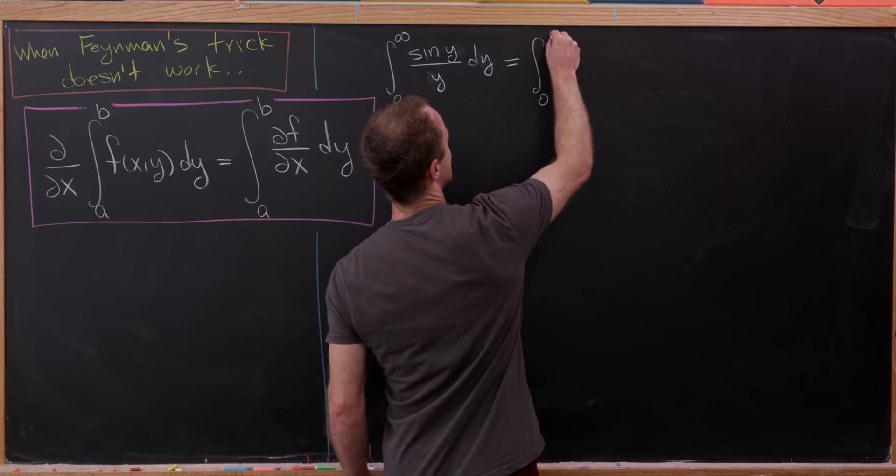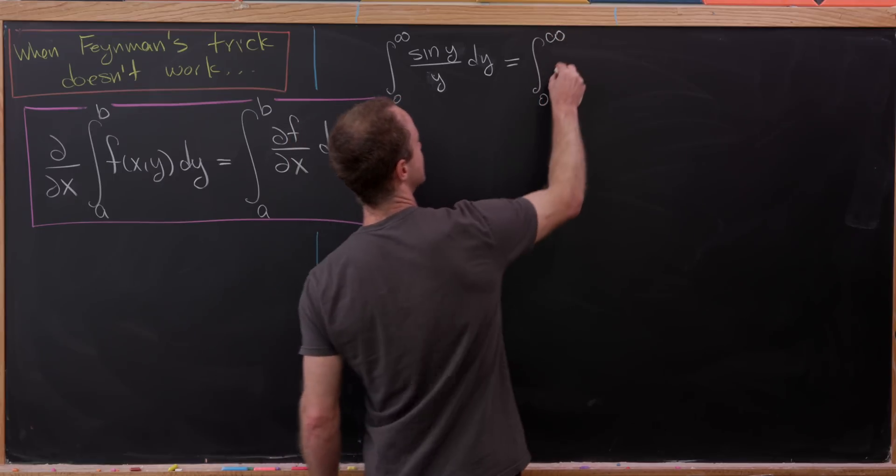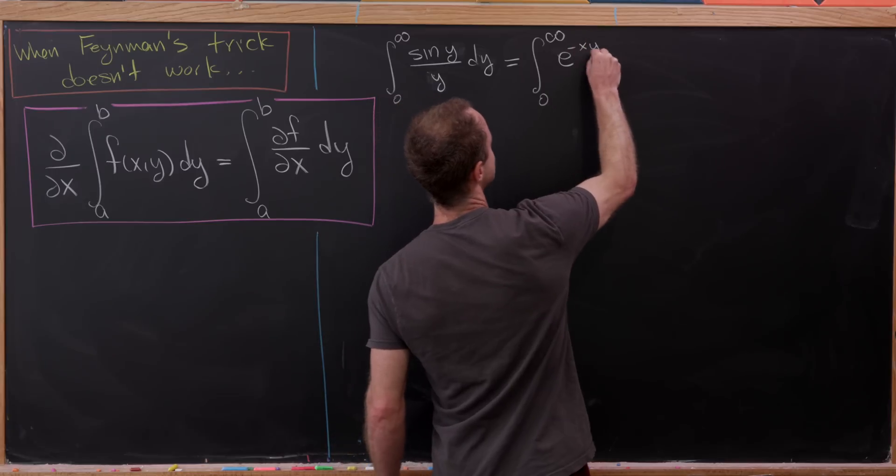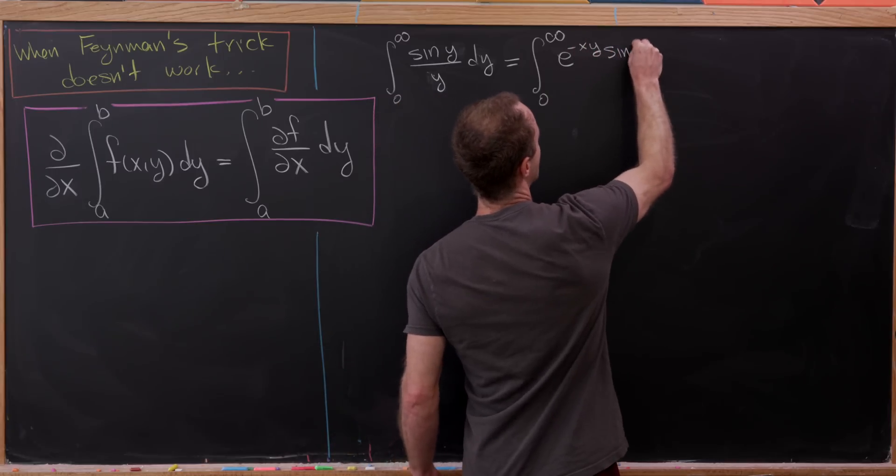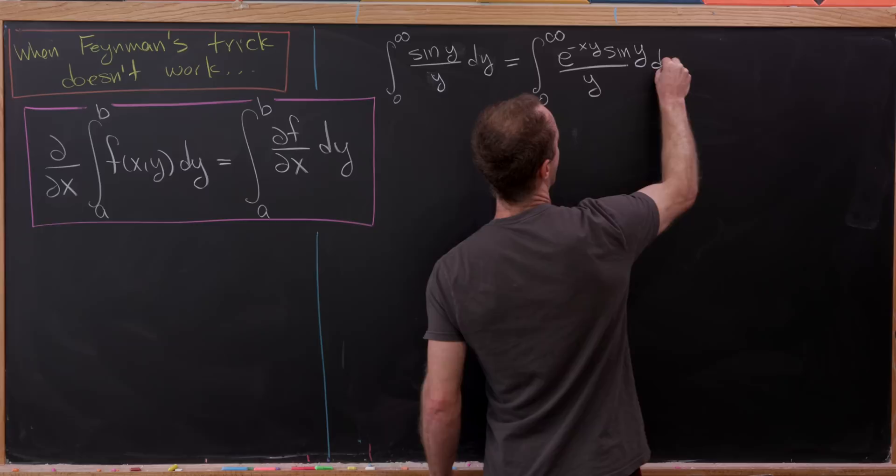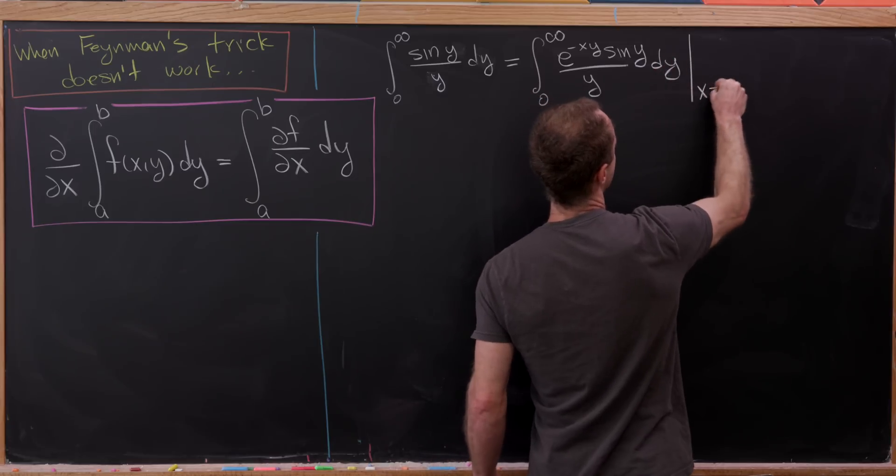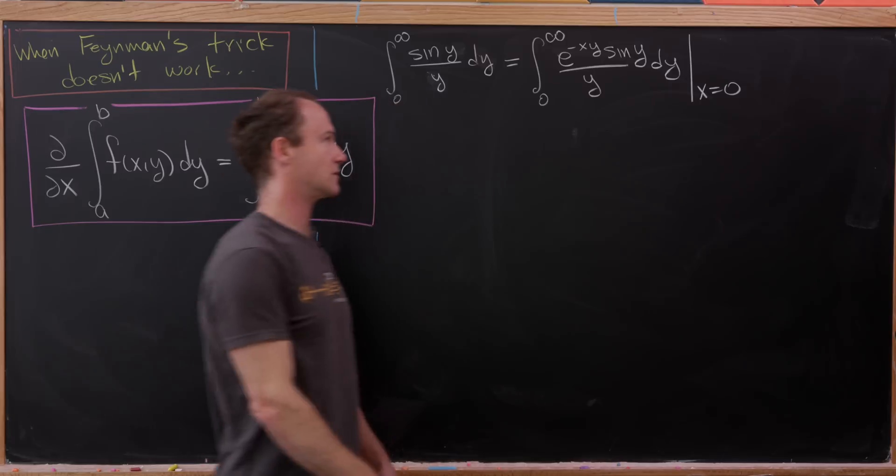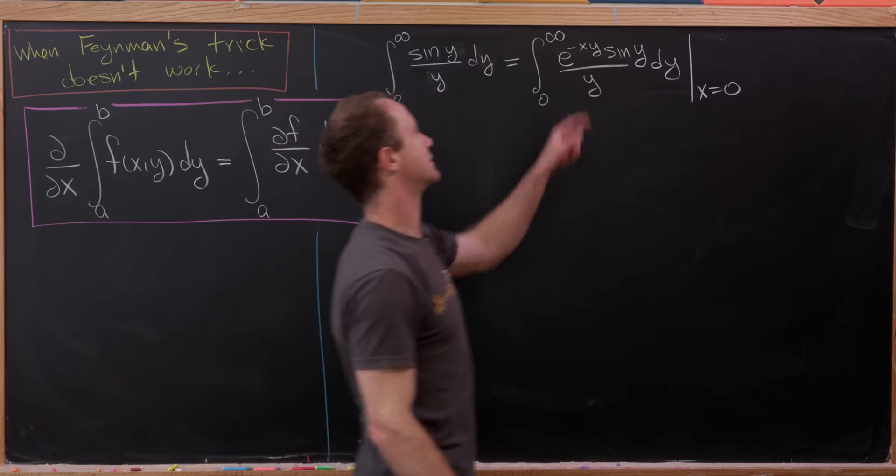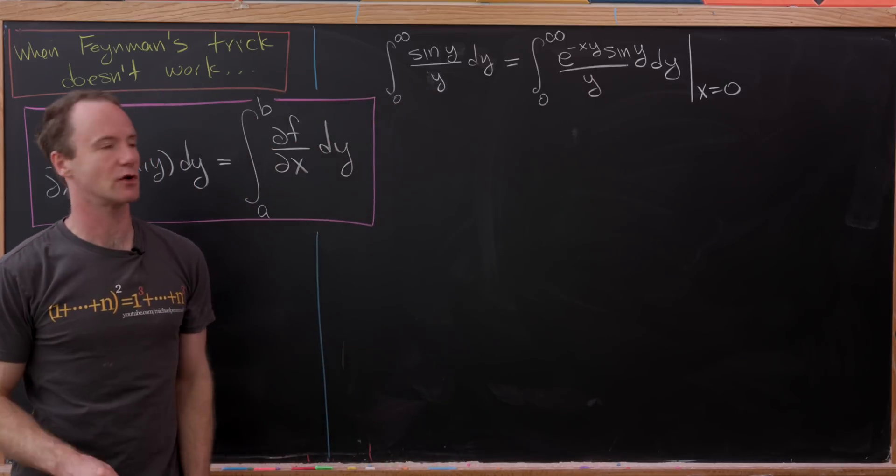Check it out. This is the same thing as the integral from zero to infinity of e to the minus xy times sine of y over y dy evaluated at x equals zero. That's because if we plug x equals zero into that exponential, we get e to the zero, which is one.